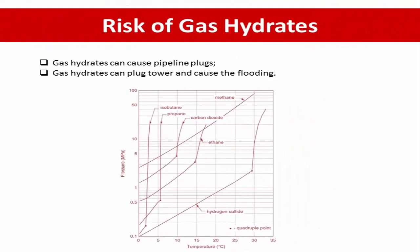Risks of gas hydrate: water condensation and hydrate formation at the top of the pipeline are severe problems in pipelines with stratified flow. Gas hydrates can cause pipeline plugs, which leads to safety and operational issues in the oil and gas industry.